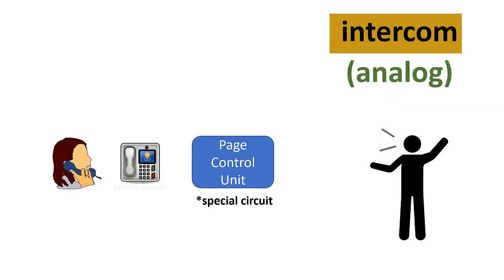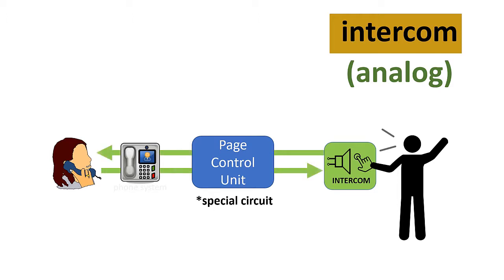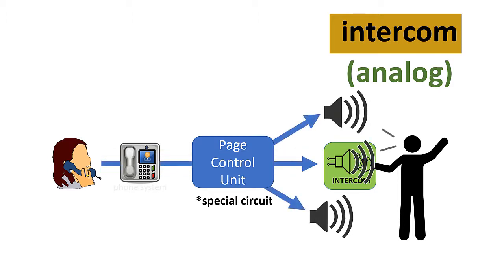Analog intercom requires the same type of page control unit used in a talkback system — one with a special built-in talkback circuit. A special speaker with a push button is required in order to initiate an intercom call. Once again, this type of system is also capable of one-way paging over all speakers.